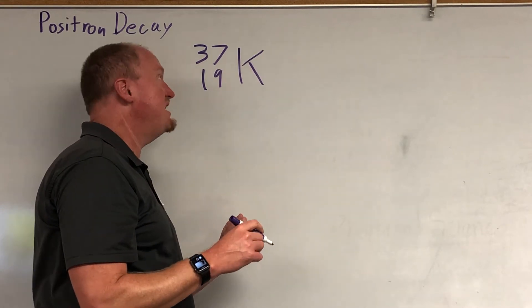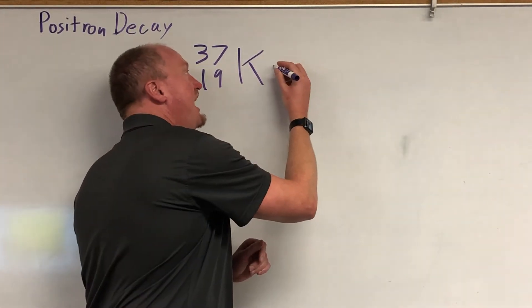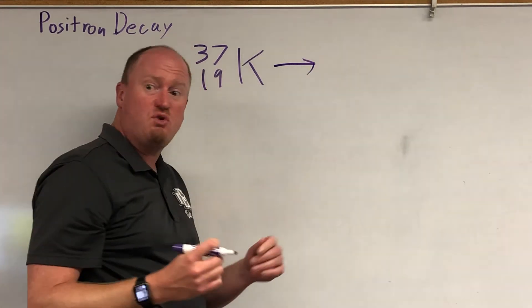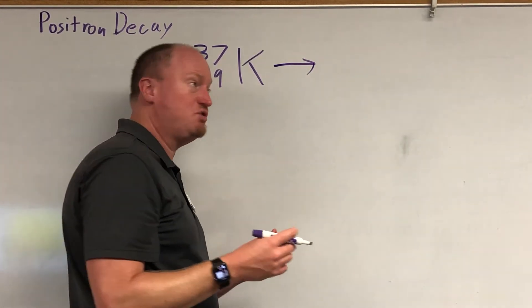Rarely, you'll get a potassium atom releasing a positron. A positron is antimatter. It's an anti-electron.